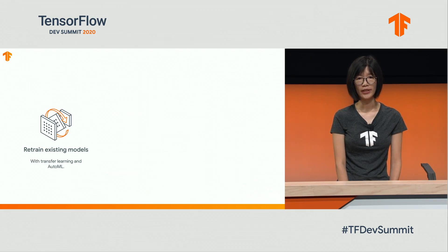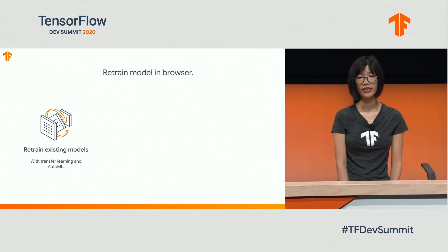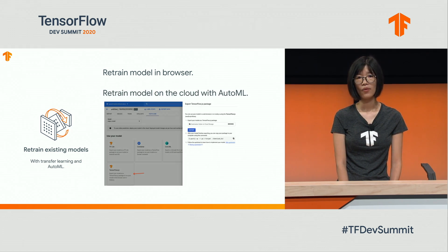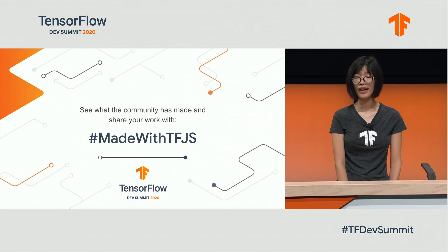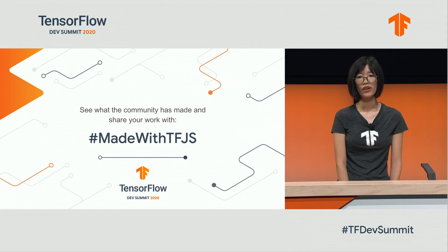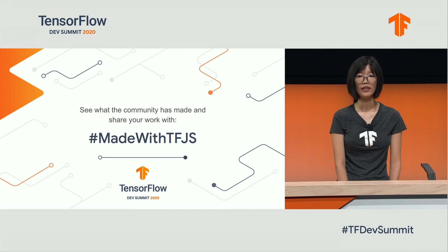We also try to make retraining existing models really easy for everyone. TF.js supports transfer learning in the browser. We also added AutoML for Vision — a cloud service that allows you to train a custom model without writing any code — making it easier than ever. We'd like you to help us make TF.js better.